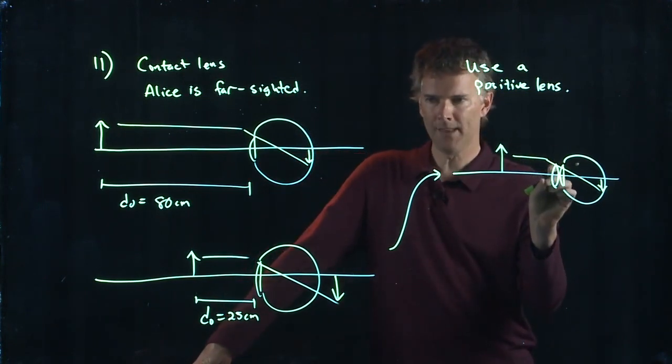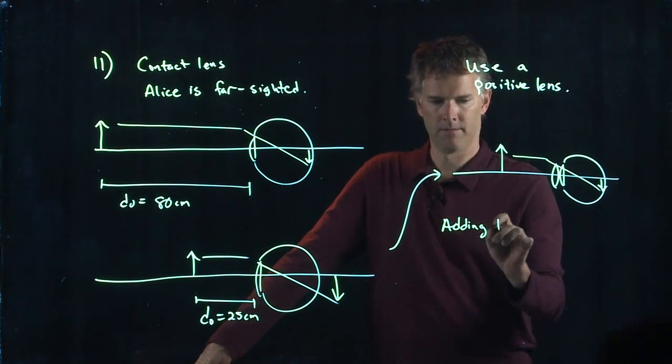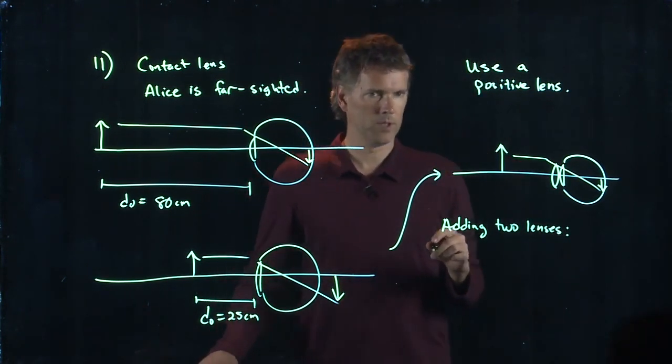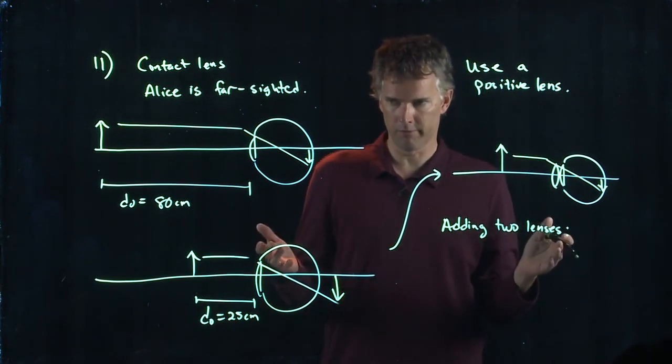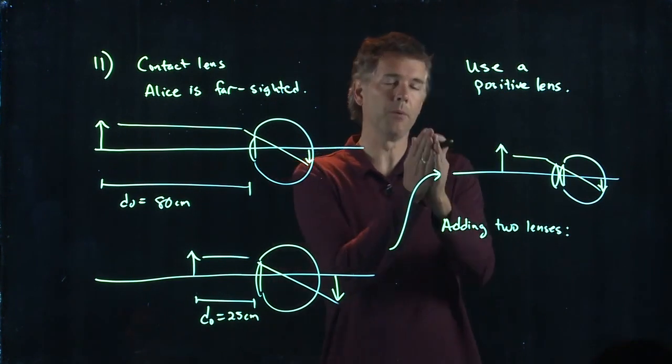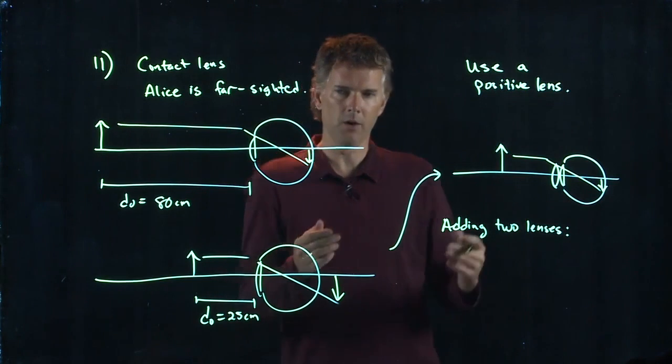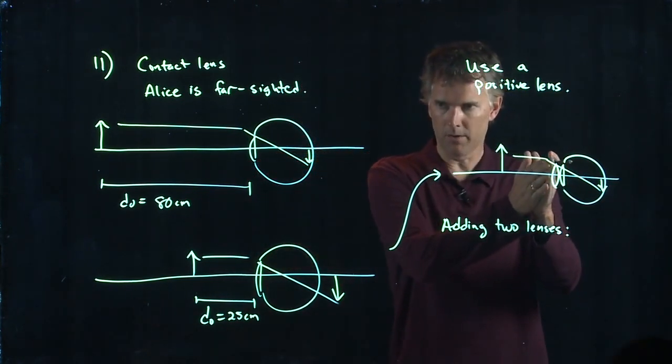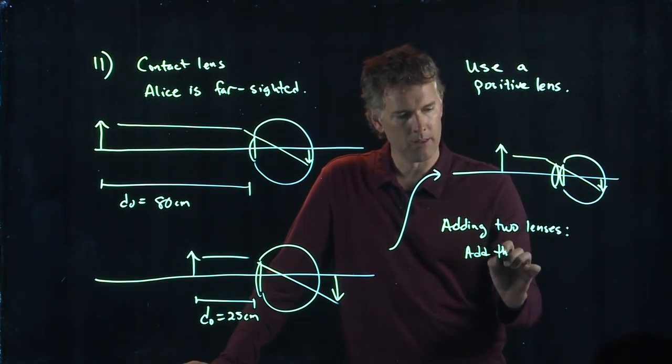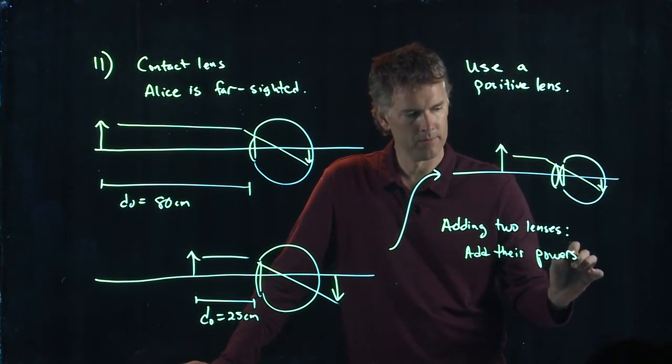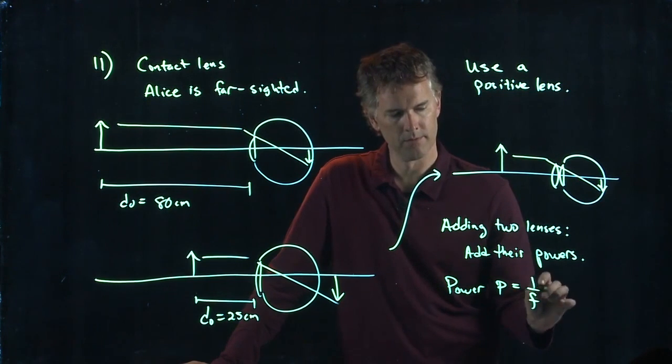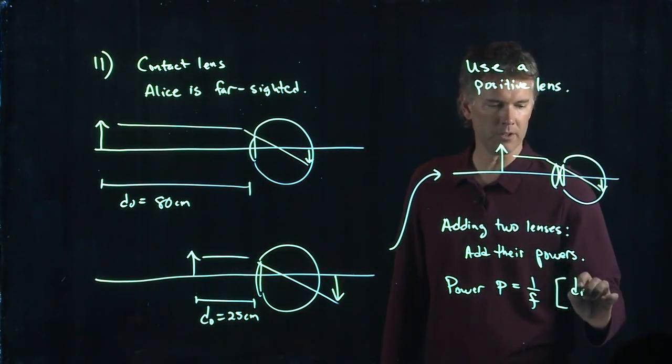So when you put two lenses together, do you add their focal lengths? If I have f1 and f2, is the resulting focal length going to be f1 plus f2? No, that doesn't sound right because that would be a much longer focal length lens. And I know that if I put a magnifying glass next to my eyeball, it's going to act like a shorter focal length lens. So when you add two lenses, you in fact add their powers. And power is one over the focal length. And remember, the units are one over meters, which is diopters.